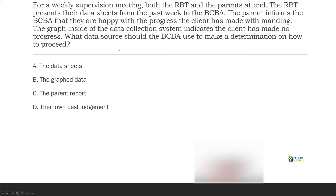Why is the graph better than the data sheets? Because we can visually analyze the graph with a high degree of fidelity. If we're just looking through raw data and trying to analyze it, there's a chance we might make a mistake. Ideally you'd use the graph first, then data sheets, and lastly parent report. Why? Parents are biased, typically indirect service — they don't see or collect the data; they go by what they feel and think they see. Our data indicates the client is not making progress, so even though the parent thinks they are, we use the actual graphed data to make a determination. So the answer is B — the graphed data.